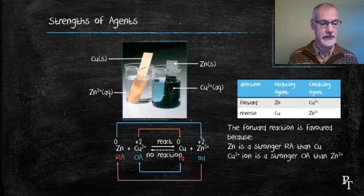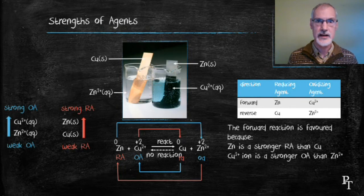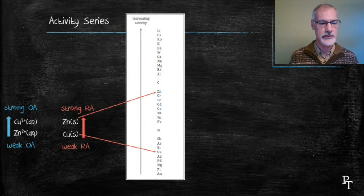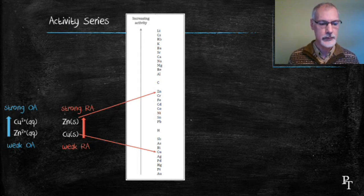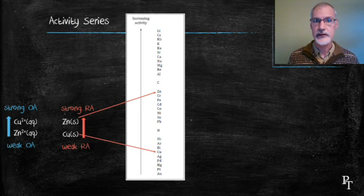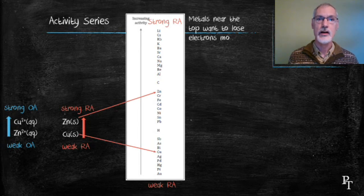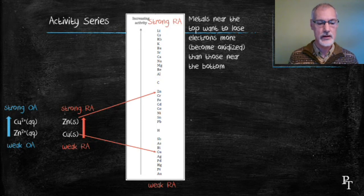Now let's look at a few tables in the IV data booklet. First is the activity series, table number 25, focusing on the reducing agents. Zinc and copper are located in their approximate positions. At the top of the table are the strongest reducing agents — substances that want to lose electrons — such as lithium, cesium, rubidium, and potassium. At the bottom, metals such as mercury, platinum, and gold don't tend to lose their electrons as easily.